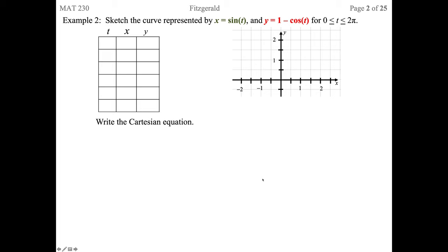Example two: sketch the curve represented by x equals sine of t and y equals 1 minus cosine t, for 0 < t ≤ 2π. Let's choose t values that keep this simple — the easiest values for sine and cosine are when they're 1s and 0s. So we choose 0, π/2, π, 3π/2, and 2π. When t is 0, sine of 0 is 0, cosine of 0 is 1, so 1 minus 1 is 0. We'd have your calculator crunch this out for us.